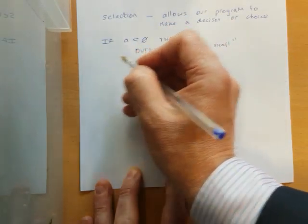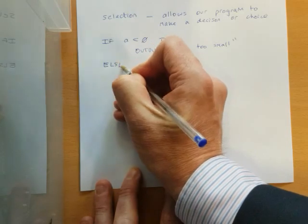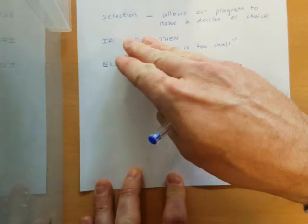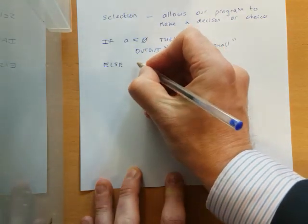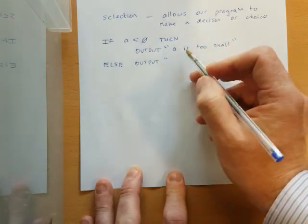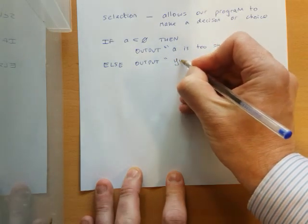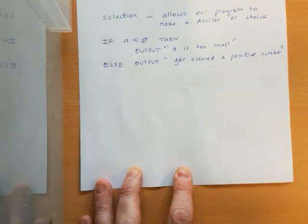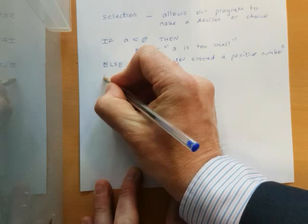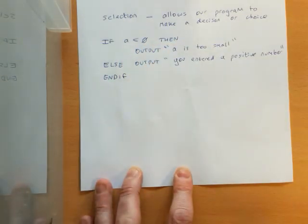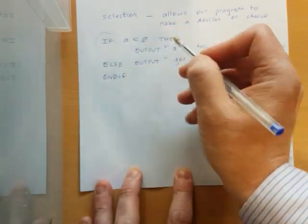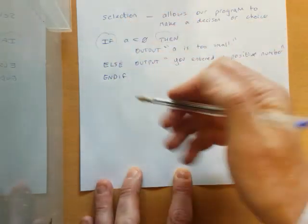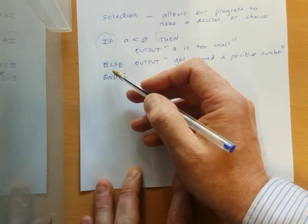So if we want to say what happens if the condition is not met we can put an else. Now you don't necessarily have to have this else here. You could just leave it like that. And if that condition wasn't met your program would just carry on. But I'm going to put here else output. So if the number wasn't less than zero it must have been greater than zero. So you entered a positive number. Finally we will stop that little routine there with an end if.